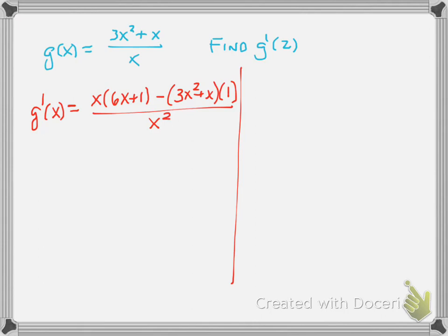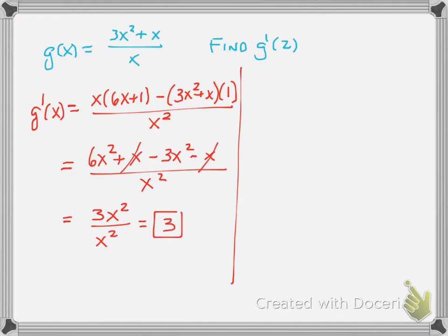Now, they asked us to find g prime of 2. So before I do that, why don't I clean up a little bit. So 6x squared plus x minus 3x squared minus x, all over x squared. Clean up a little bit more. You have 3x squared, the x's cancel. This is good. Over x squared, and lo and behold, you get 3. So even if you asked me to do g prime of 2, it would have to be 3 because there's nothing, there's nowhere to plug in 2.